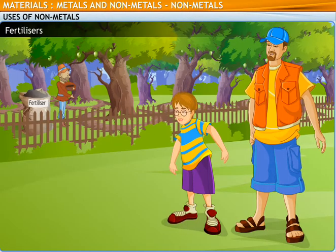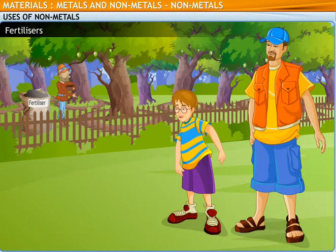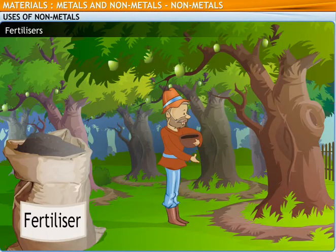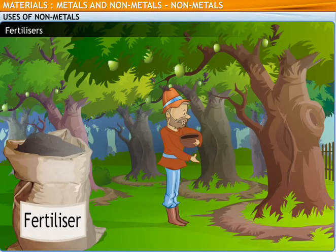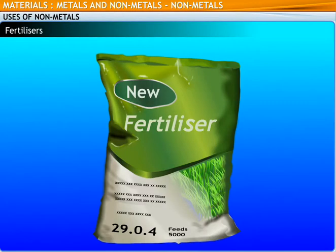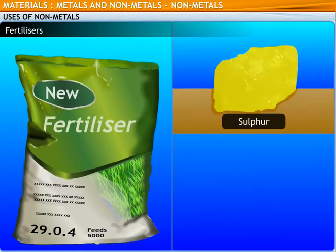Look, Dad, an orchard. What's the farmer doing? The farmer is adding fertilizers to the trees so that the trees grow well and bear fruits. Fertilizers contain non-metals like sulfur, phosphorus and nitrogen.